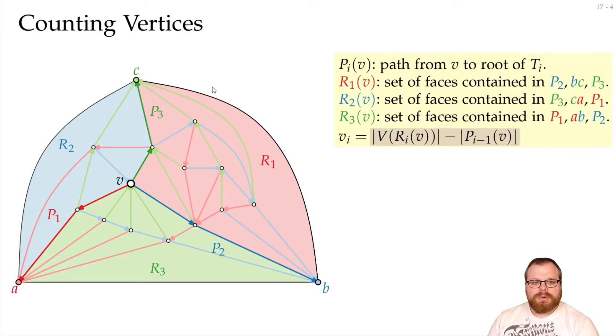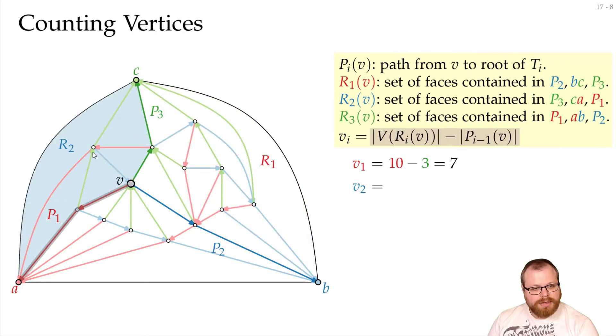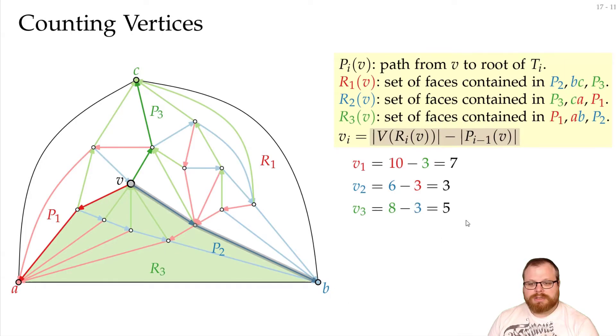So in this example for v_1, we have 1, 2, 3, 4, 5, 6, 7, 8, 9, 10 vertices, but we have 3 on this path, so it's 7. For v_2 we have 1, 2, 3 vertices here, those we don't count, so we have a 3. And for v_3 we count 1, 2, 3, 4, 5 vertices, not these three, so we have a 5.